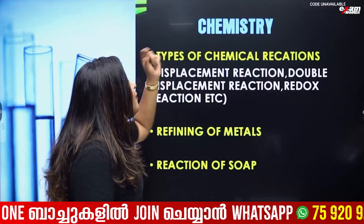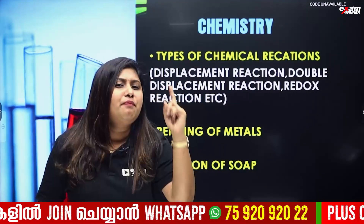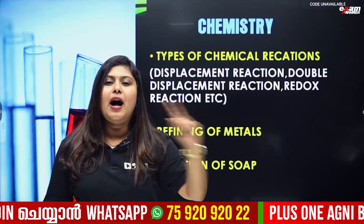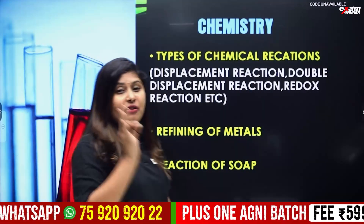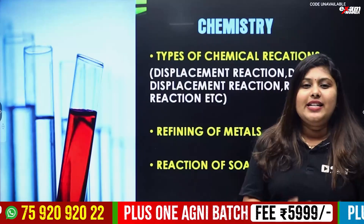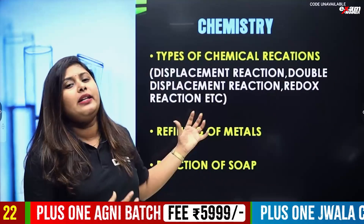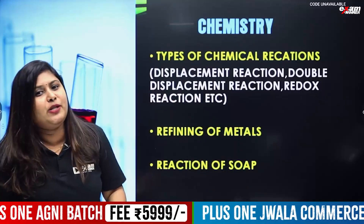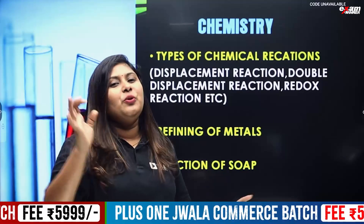Types of chemical reactions are the first important must item. The second is refining of metals — we will learn the complete refining process. This is a must item that we will not skip.